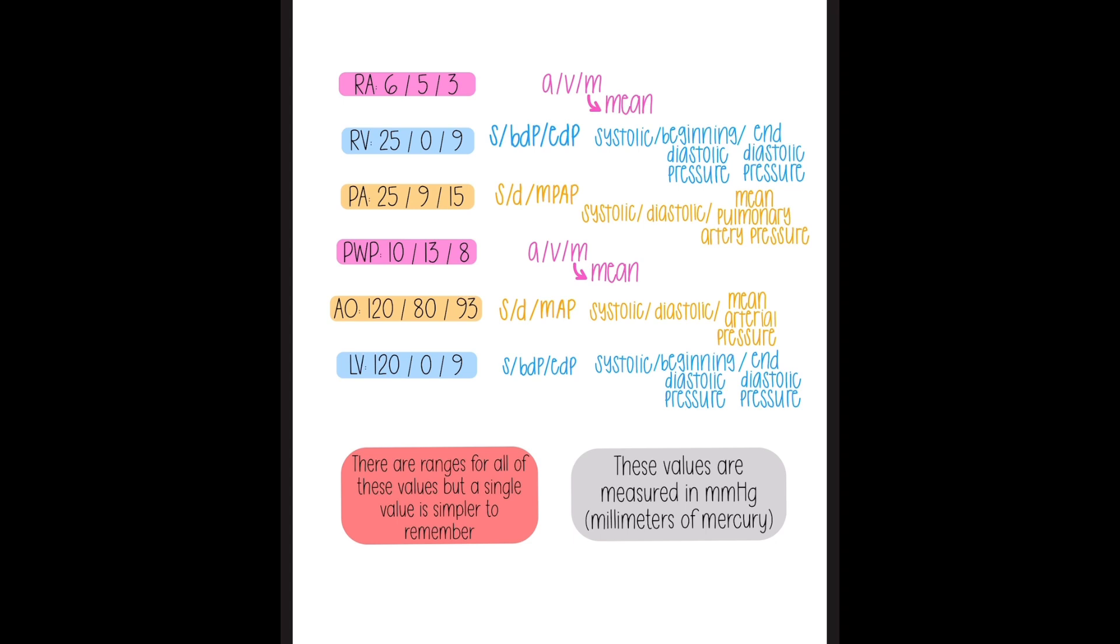Now we obtain these during right heart cath, where the catheter is in each chamber and it transduces a pressure. These during a left heart cath, when the pigtail's in the left ventricle and pulled back into the aorta. Now this is representative also of systemic blood pressure. So the blood pressure you're taking on the arm, when you're transducing a pressure from your femoral sheath or radial sheath,